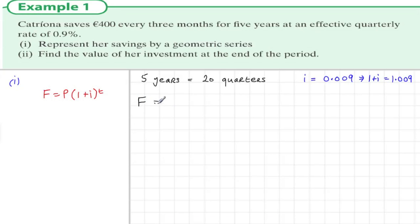Now the future values - there are a number of them. The first 400 euros invested 20 quarters ago would have had 20 lots of 1.009. The next one would have 19 terms of interest, and this is a series going down to the last 400 euros invested, which would have just one term of interest. So this is a geometric series - a series means there's plus signs between them, going from term 20 to term 1.